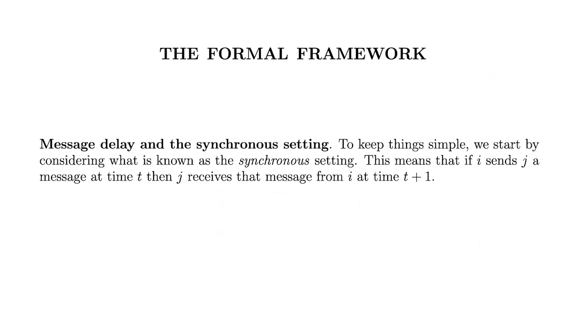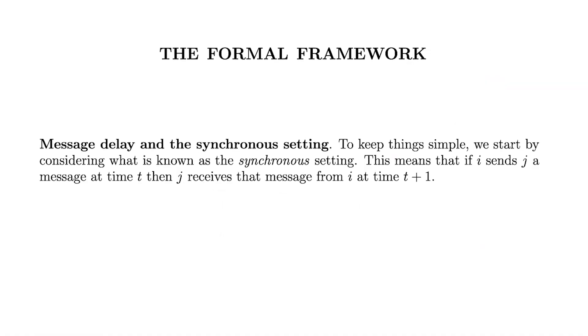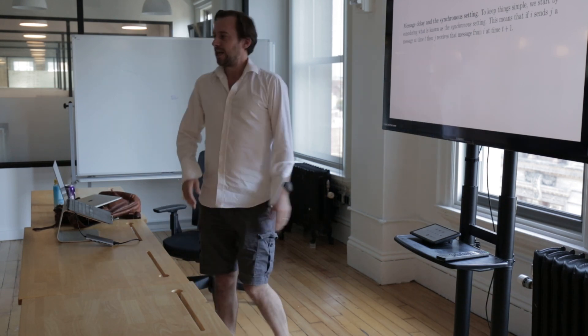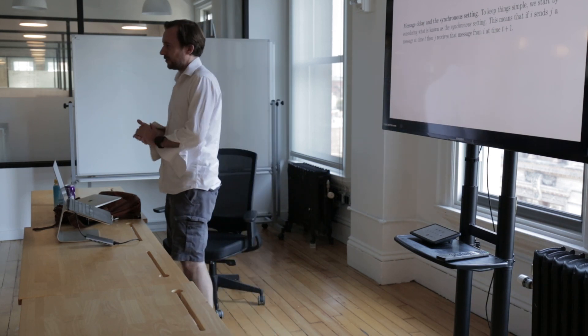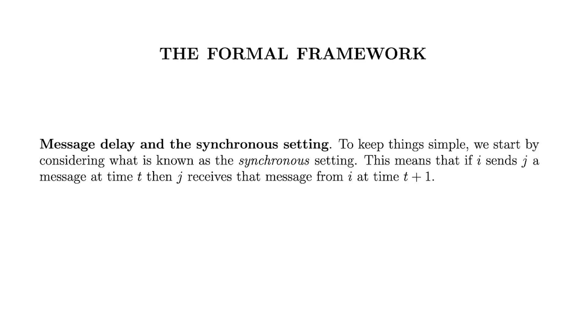Let's decide how reliable message delivery should be. Last time we focused entirely on the synchronous setting. The simplest version is: if I send a message at time t, it arrives at time t plus 1. A slight variant has some bound delta, where a message sent at time t arrives by time t plus delta. For our purposes, every theorem holds for one if and only if it holds for the other, with a slightly modified proof, so we focus on the simple version.